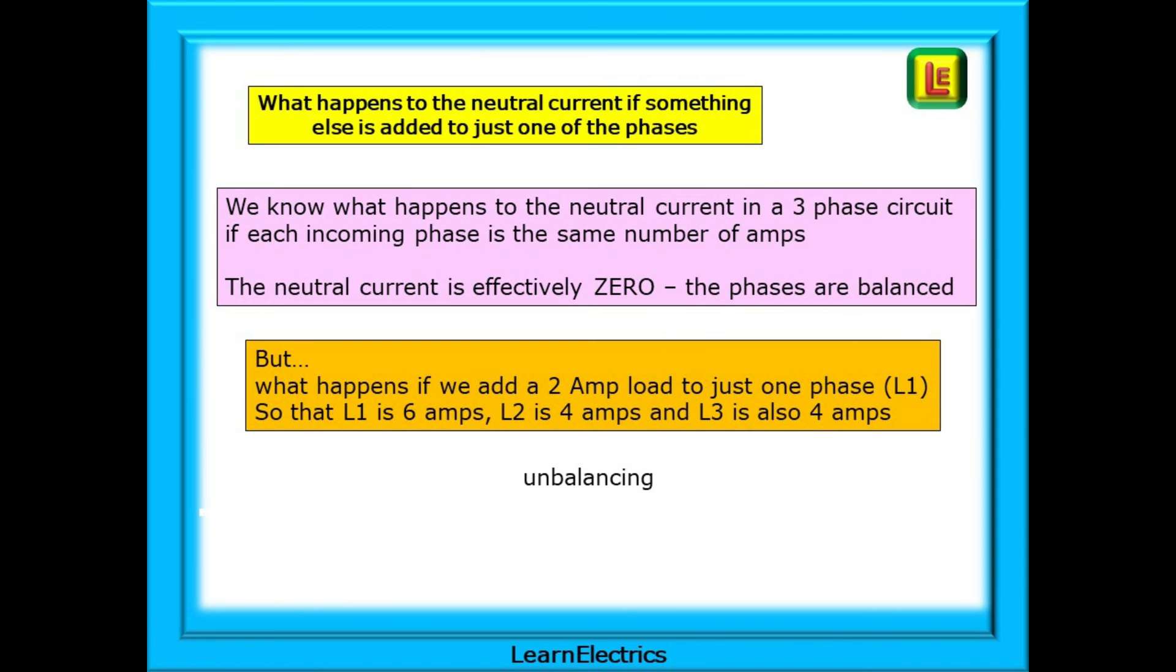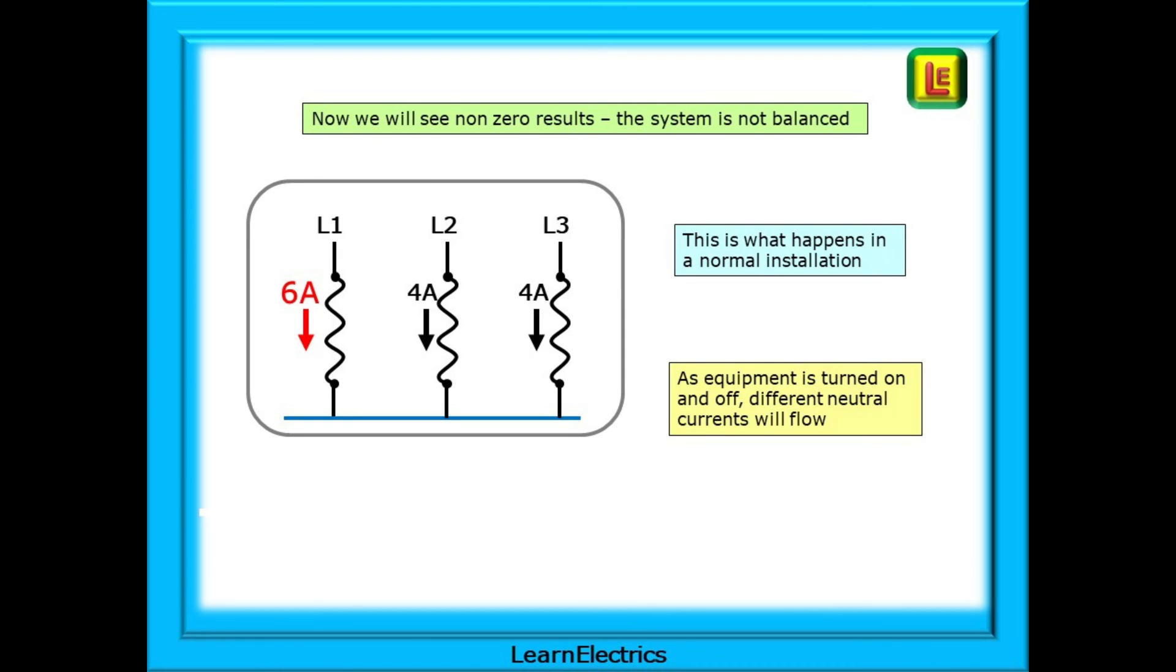But what happens to the neutral current if something else is added to just one of the phases? We know what happens to the neutral current in a three-phase circuit if each incoming phase is the same number of amps. The neutral current is effectively 0, and the phases are balanced. But what happens if we add an extra 2-amp load to just one phase? Let's say L1. So that L1 becomes 6 amps, L2 stays at 4 amps, and L3 is at 4 amps also. Now, we will start to see non-zero results, because the system is unbalanced. And this is exactly what happens in normal situations.